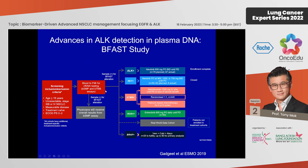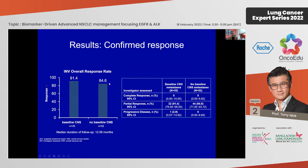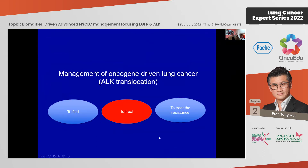We are moving toward detecting ALK from plasma by NGS. The BFAST study used plasma DNA to identify ALK-positive patients who then received alectinib. The response rate was very high — 80 to 90% — confirming that plasma DNA can identify patients accurately with high response rates. So we can use IHC, FISH, or plasma cell-free DNA by NGS to detect ALK.